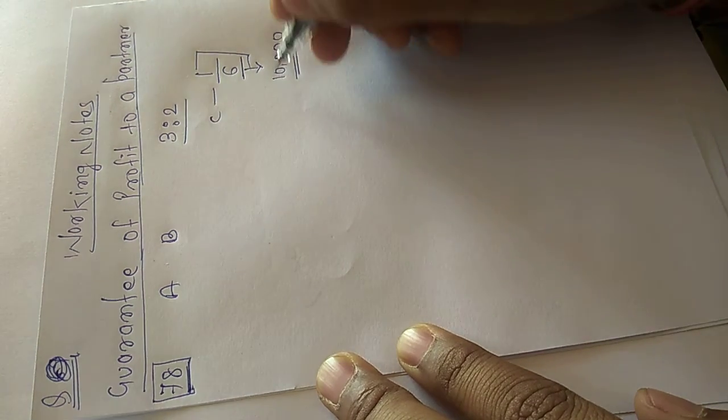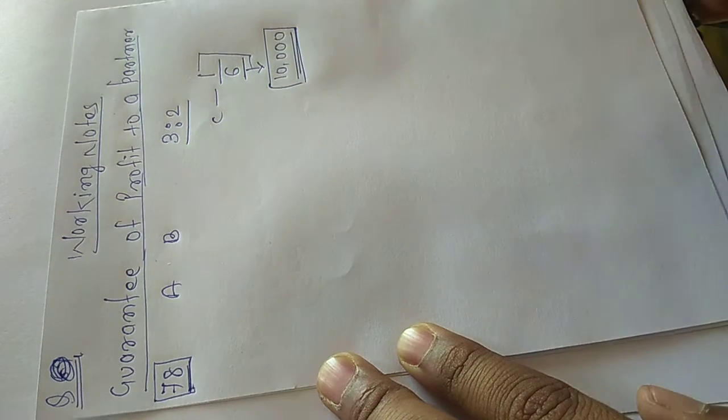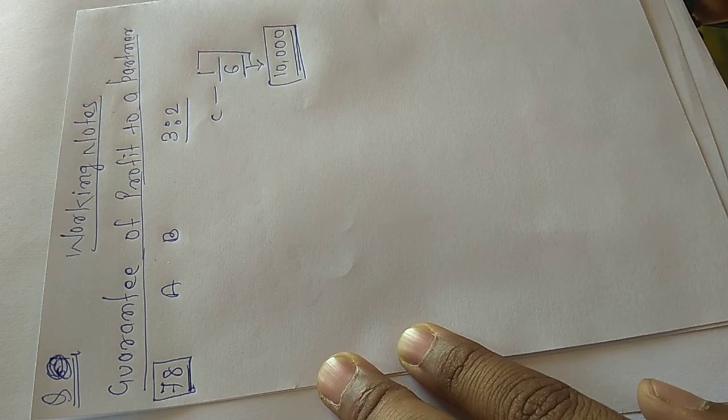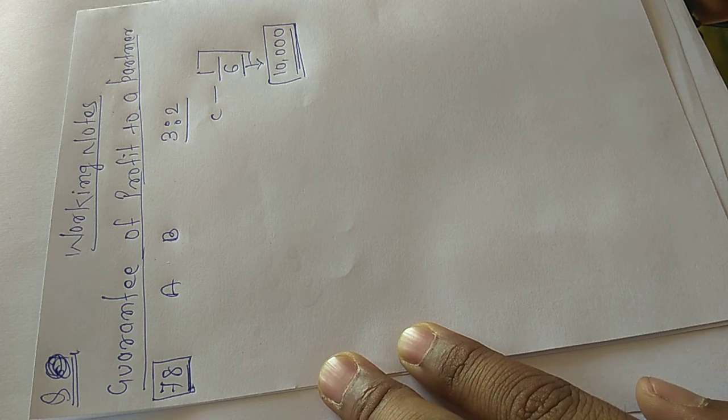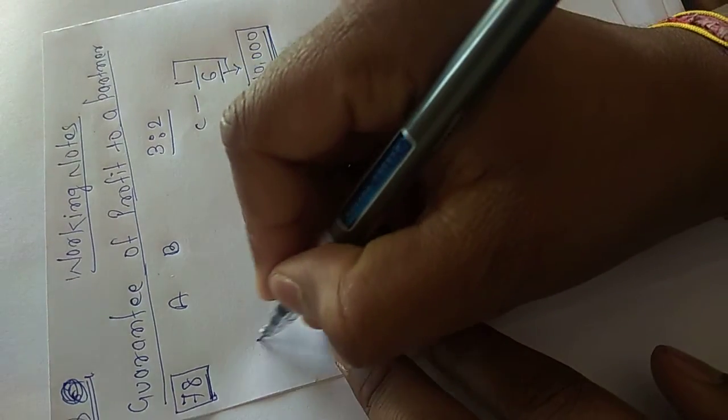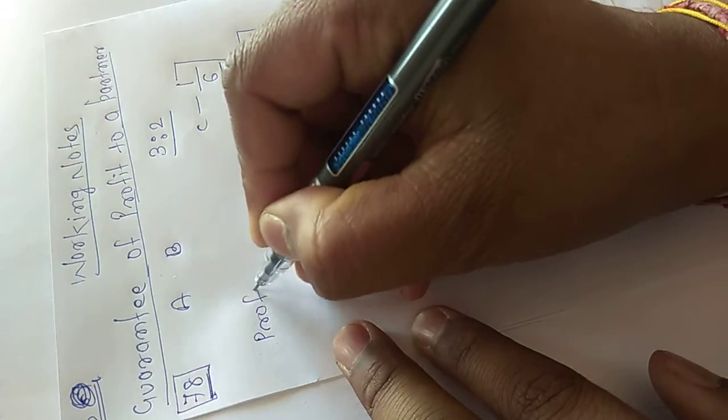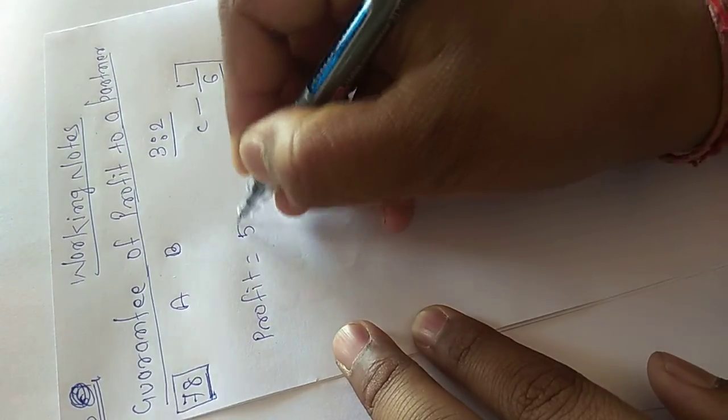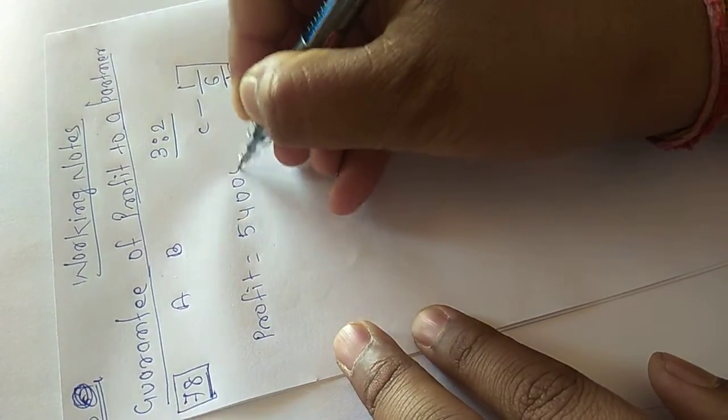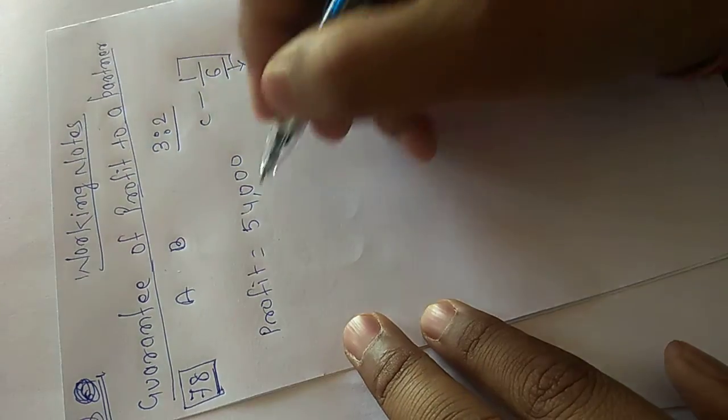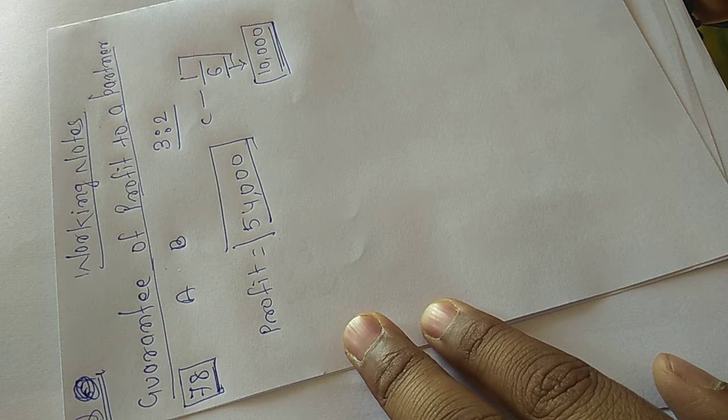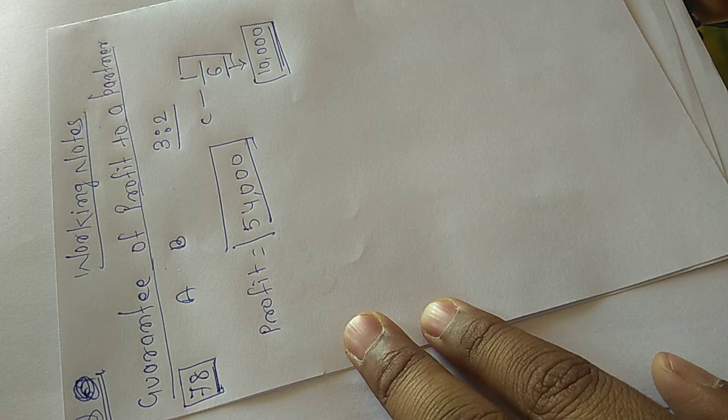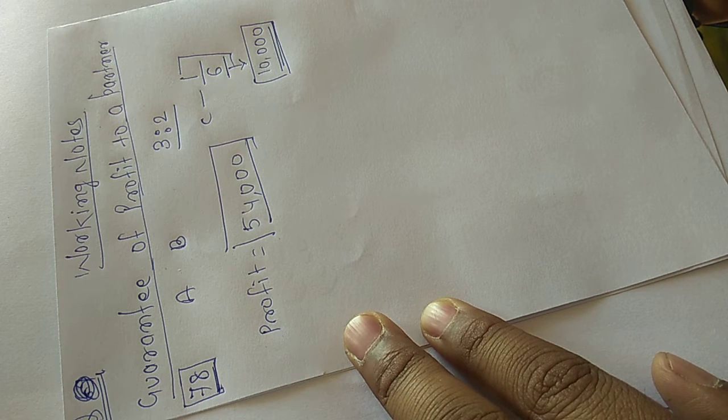So guarantee amount of C is equal to 10,000. At the close of the first financial year, the firm earned a profit of 54,000. And find out the shares of profit which A, B, C will get.